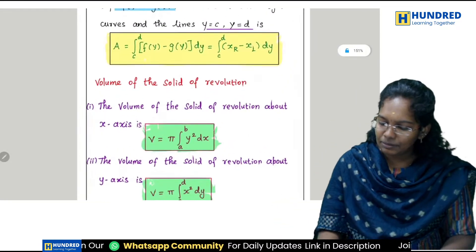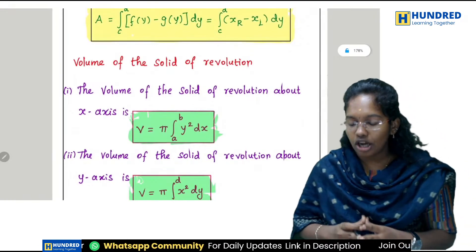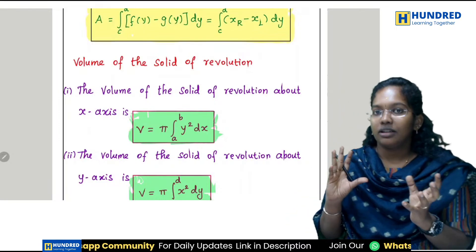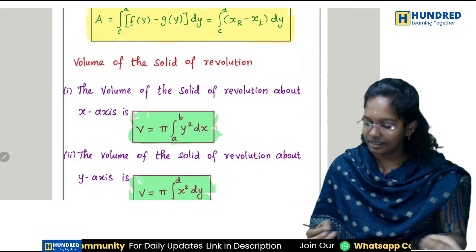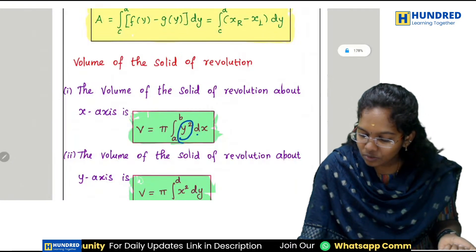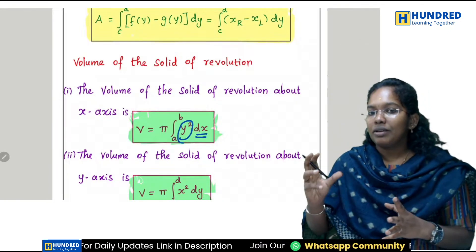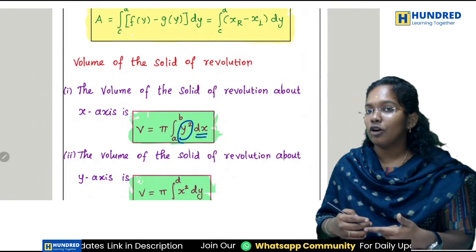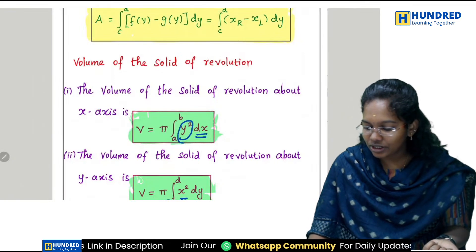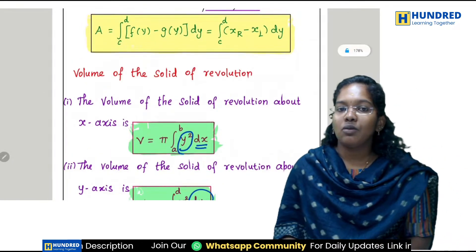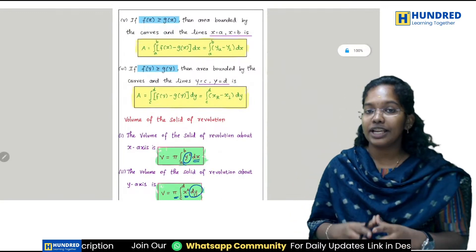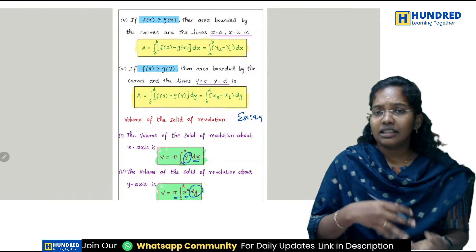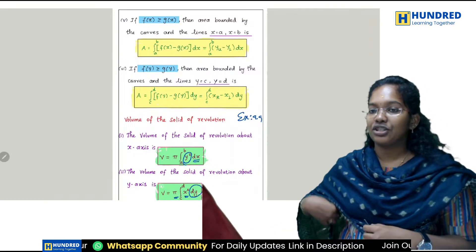Exercise 9.9 is volume. The volume formula: if rotating around the x-axis, the formula is pi times integral from a to b of y squared dx. If revolving around the y-axis, the formula is pi times integral of x squared dy. These two formulas are the volume formulas. Exercise 9.9 covers volume and exercise 9.8 covers area. The integration chapter is now finished.